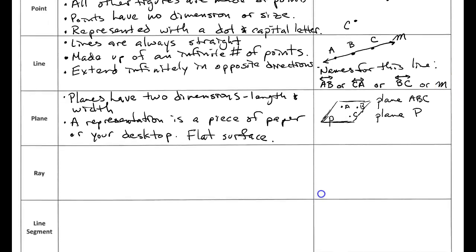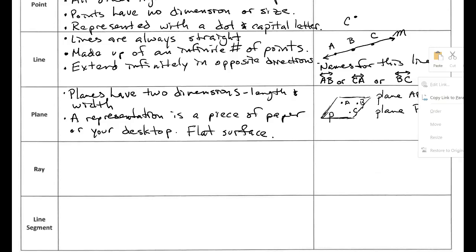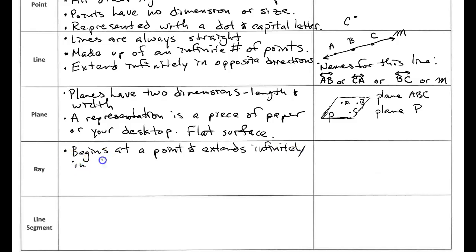Alright let's move on to rays. So a ray begins at a point and extends infinitely in one direction. And it begins at the end point. So the point that it starts is called the end point.